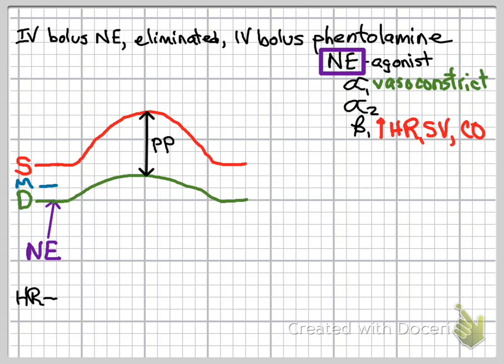This will manifest as an increase in pulse pressure — that is, an increase in the systolic minus diastolic amount. Comparing pulse pressure after drug administration to before, you see that norepinephrine has caused an increase in pulse pressure. When you see an increase in pulse pressure, think increased contractility and beta-1 agonist effects.